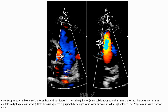Blue jet: forward systolic flow from the right ventricle to the pulmonary artery with reversal in diastole shown as a red jet. Note the aliasing in the regurgitation diastolic jet. Due to the high velocity, the regurgitation is noted.